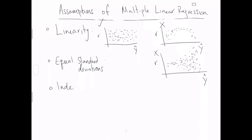The next assumption is independence. There's no great plot to check independence — you just have to think about how the data were collected. In multiple linear regression, each row has multiple columns and variables. No two rows in your data set should have any kind of inherent relationship. You want independent data.